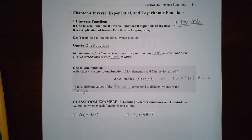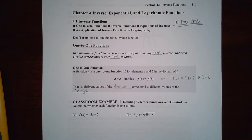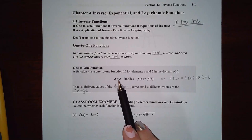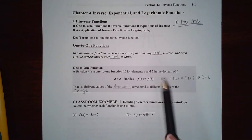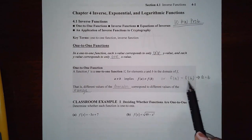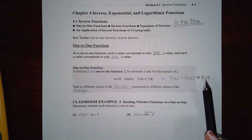The first thing we want to talk about is a one-to-one function. A one-to-one function is when each x value corresponds to only one y value, and each y value only corresponds to one x value. So if two x values are not equivalent to each other, then the y values should not be equivalent to each other. Or vice versa, if two y values are equal, then the x values would have had to have been equal as well.